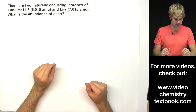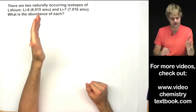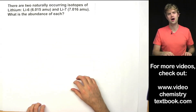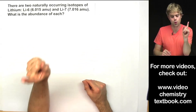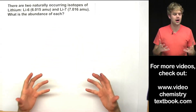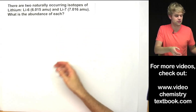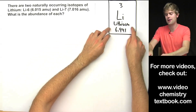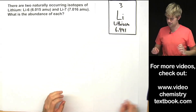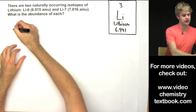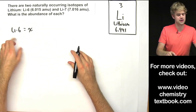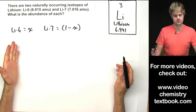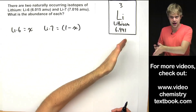There are two naturally occurring isotopes of lithium: lithium-6 with a mass of 6.015 amu, and lithium-7 with a mass of 7.016 amu. What is the abundance of each? One piece of information we need that isn't given in the problem is the atomic mass of lithium. We can look it up on the periodic table — the number 6.941 tells us the relative atomic mass for lithium. Now, for our two unknowns: lithium-6's abundance equals x, and lithium-7's abundance equals 1 minus x.